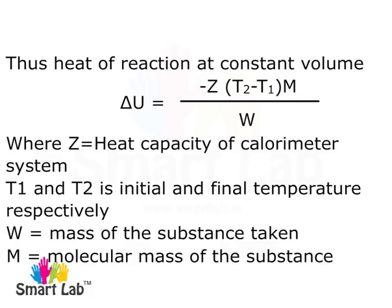Delta U equals minus Z times (T2 minus T1) times M divided by W. Where Z equals heat capacity of calorimeter system, T1 and T2 is initial and final temperature respectively, W equals mass of the substance taken, and M equals molecular mass of the substance.